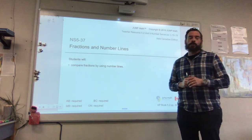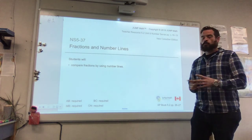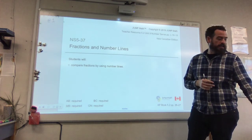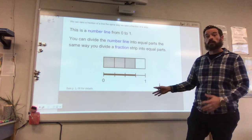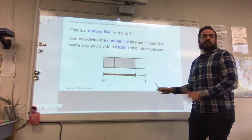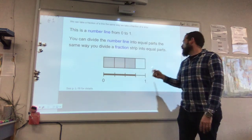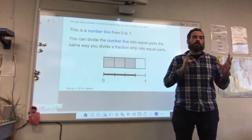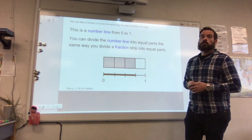Moving on to fractions and number lines. This is going to be similar to what we did the other day with just fractions and fraction strips. It's going to show a different way to represent fractions — this time, instead of using fraction strips, we're going to be using a number line. One thing to point out: when we're using fractions, the number line is only going to go up to 1, because a fraction is a part of a whole. A whole would be 1.